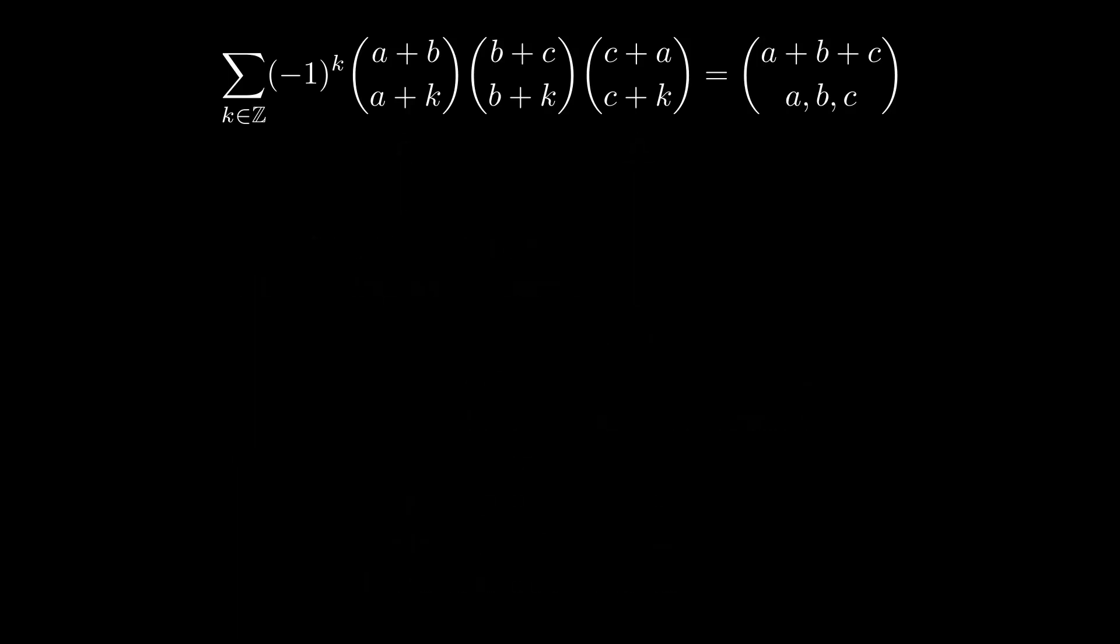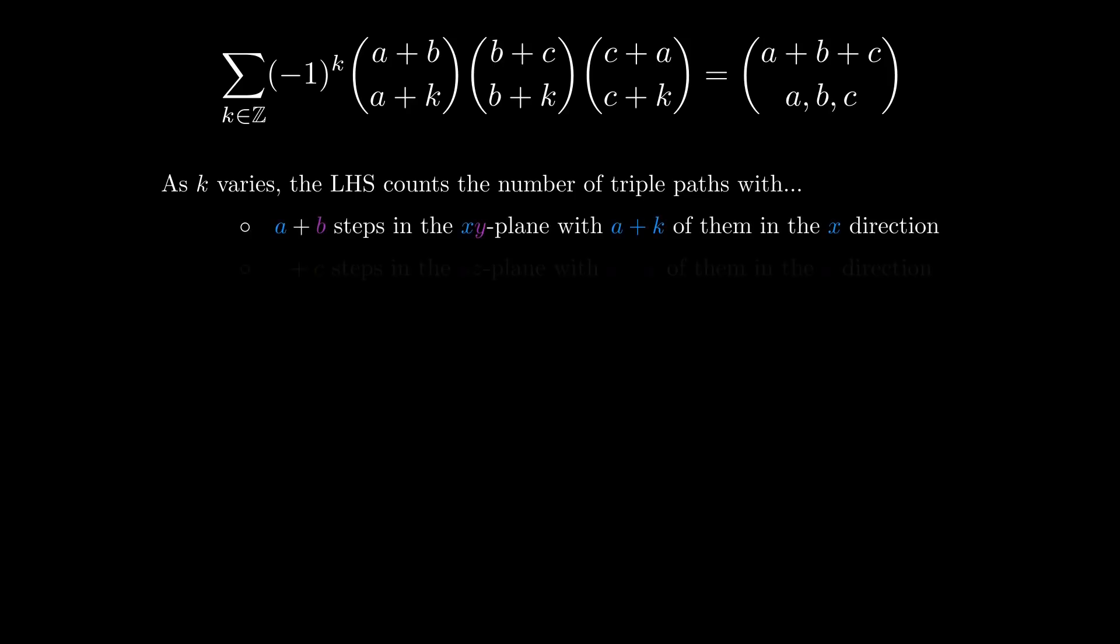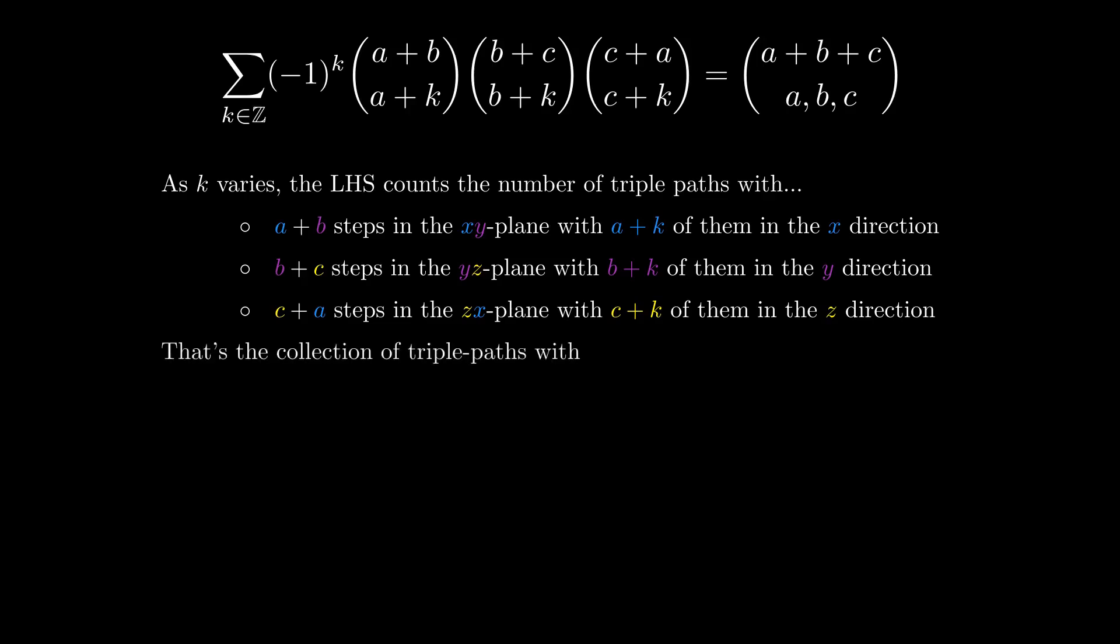That was a lot to keep in our heads at once so let's restate it carefully and clearly. As k varies, the left-hand side counts the number of triple paths. One path that takes a + b steps in the xy plane with a + k steps in the x direction. One with b + c steps in the yz plane with b + k in the y direction. And a third path with c + a steps in the zx plane with c + k in the z direction. That's the collection of all triple paths with 2a steps in the x direction, 2b steps in y, and 2c steps in z.